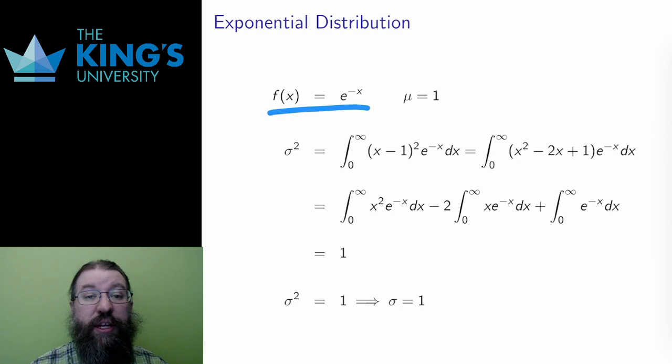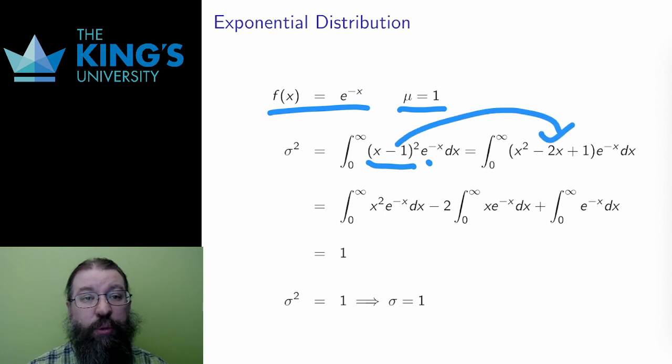I'll start with the exponential distribution. The mean is 1, as I calculated a couple of videos ago. That means the integral I need to calculate is x minus 1 squared, multiplied by the distribution. I expand this binomial and split it up using linearity to get three integrals.